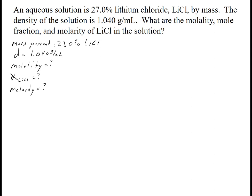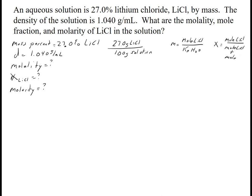Step one is to take the percent and make it a fraction: 27.0 grams of LiCl over 100 grams of solution. Step two is to write down the formulas. Molality is moles of LiCl over kilograms of water. Mole fraction is moles of LiCl over moles of LiCl plus moles of water. Molarity (big M) is moles of LiCl over liters of solution.